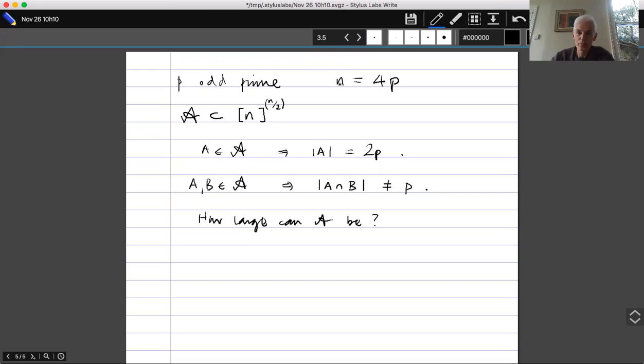So we can imagine that n might be rather large. So we just pick a very large prime and multiply it by four, we get a large integer. And then there's only one intersection size that we're ruling out, and the number of sets that we could in principle choose, number of sets of size 2p, is roughly 2 to the n over root n.